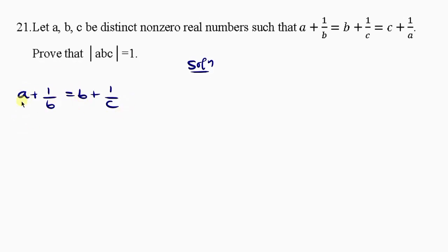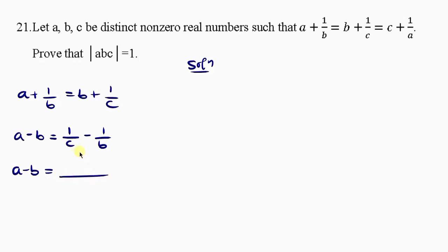So we have A minus B on the left. When plus 1 over B crosses to the right, it becomes minus 1 over B. So A minus B equals 1 over C minus 1 over B. Taking the LCM of C and B, which is BC: BC divided by C leaves B, and BC divided by B leaves C. So A minus B equals B minus C over BC.